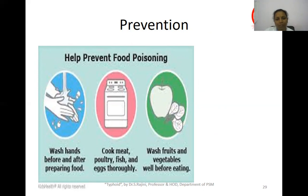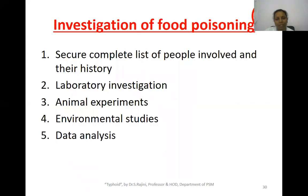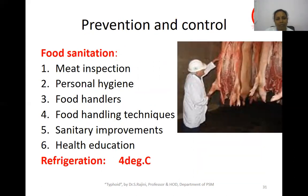To help prevent food poisoning: wash hands before and after preparing food, cook meat, poultry, fish, and eggs thoroughly, and wash fruits and vegetables well before eating. Investigations include lab analysis of the remains of contaminated food or drink, animal experiments, environmental studies, and data analysis. Prevention and control is mainly through food sanitation, meat inspection in slaughterhouses, personal hygiene, food handling techniques, and health education for food handlers.